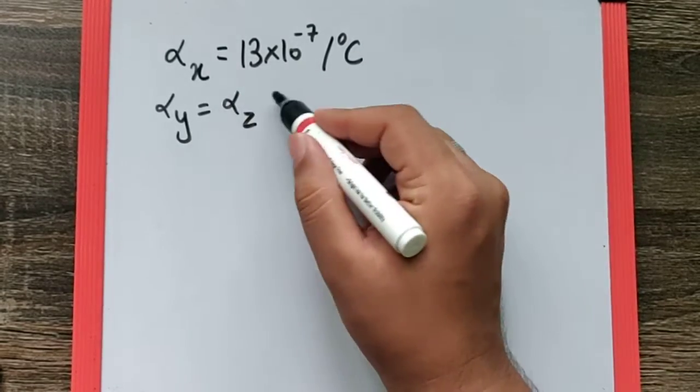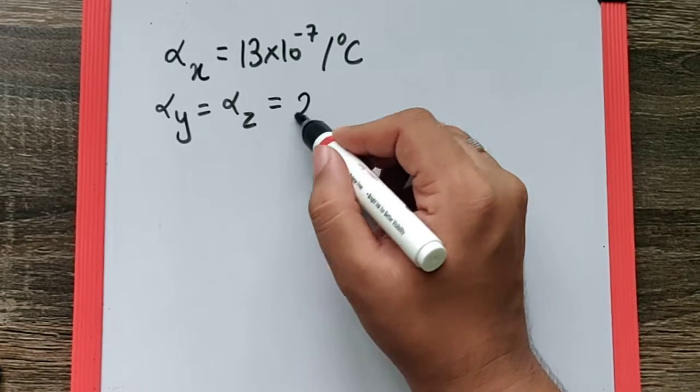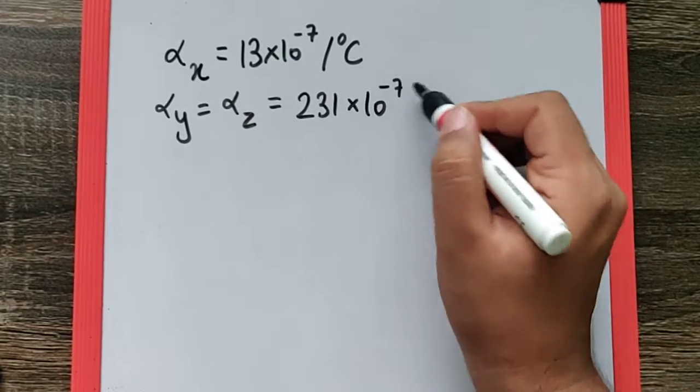which are both perpendicular to x, is given as 231×10⁻⁷ per degree Celsius.